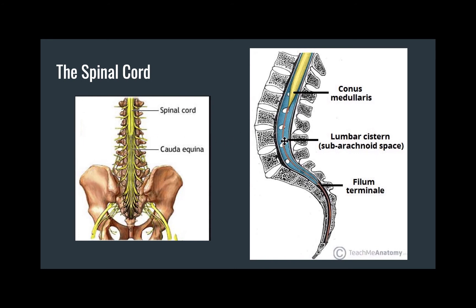In the rightmost image we can see the filum terminale, which is an almost thread-like extension of pia mater that penetrates through the dura mater into the lower vertebral segments. This is clinically significant because it marks a tract of regression of the spinal cord throughout development and also helps to support and stabilize the spinal cord, acting somewhat like an anchor. There is also an additional extension of the dura and arachnoid mater; these two layers are closely adhered, meaning the entire region is filled with cerebrospinal fluid and is the subarachnoid space.